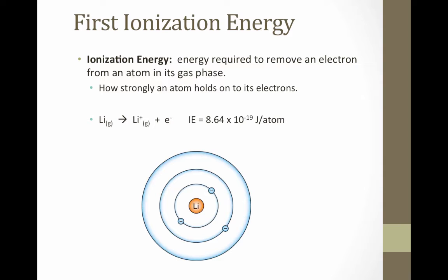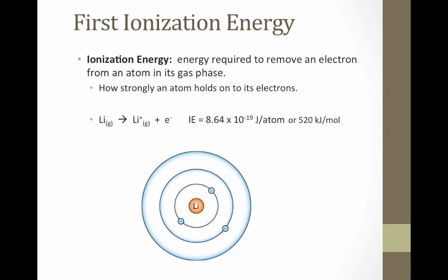You can also think about this as how strongly an atom holds onto its electrons, since electrons that are held more strongly will require more energy to remove them from the atom. For example, in order to remove the first electron from lithium — in this case the first electron is the one farthest away from the nucleus — it will require 8.64 times 10 to the negative 9th joules for every atom. Likewise, it requires 520 kilojoules to remove a mole of electrons from a mole of lithium atoms, giving us an Li-plus ion.